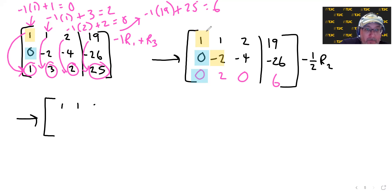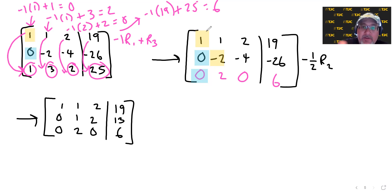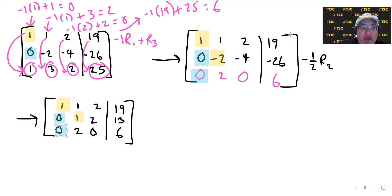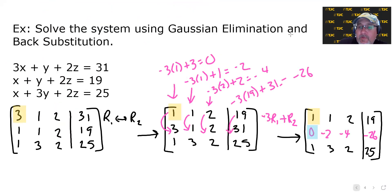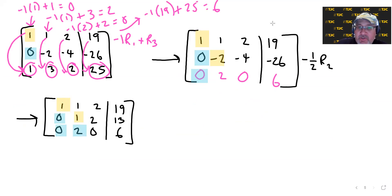The first and third rows are not changing. Multiplying the second row by negative one-half: 0 times negative one-half is 0; negative 2 times negative one-half is 1; negative 4 times negative one-half is 2; and negative 26 times negative one-half is 13. We want 1s as our pivots and 0s below them. We've got one of the 0s already, but we still need a 0 below this new pivot.